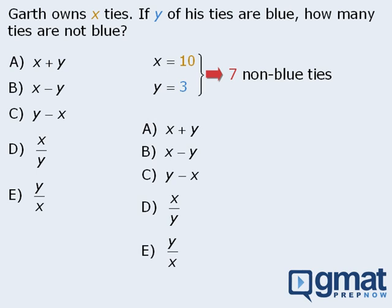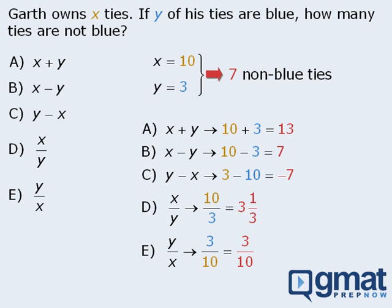At this point, we checked each answer choice to see whether it yielded the target output of 7 non-blue ties. When we plugged x equals 10 and y equals 3 into the expressions and evaluated them, we found that only one expression yielded the target output of 7. So the correct answer must be B.